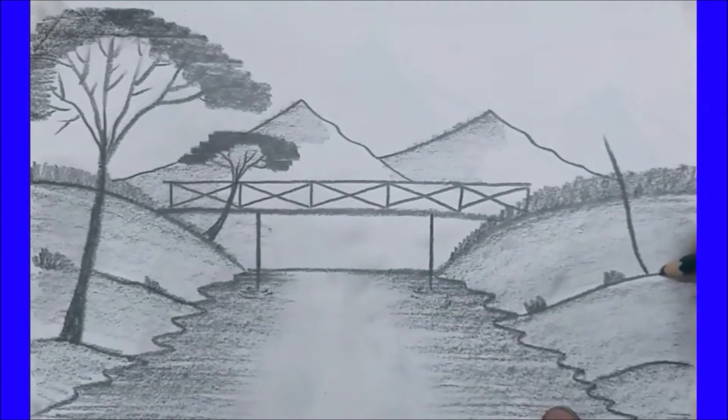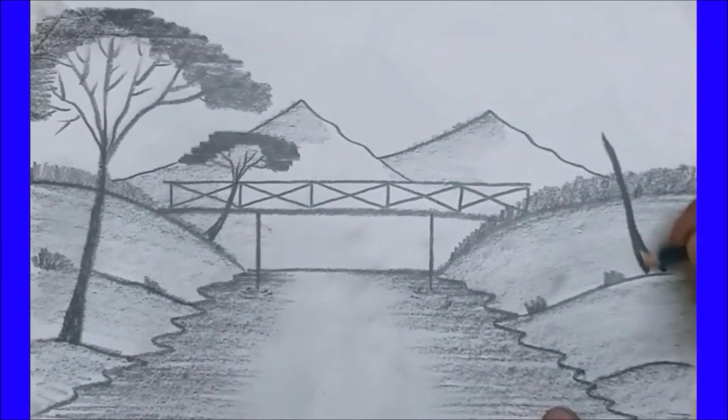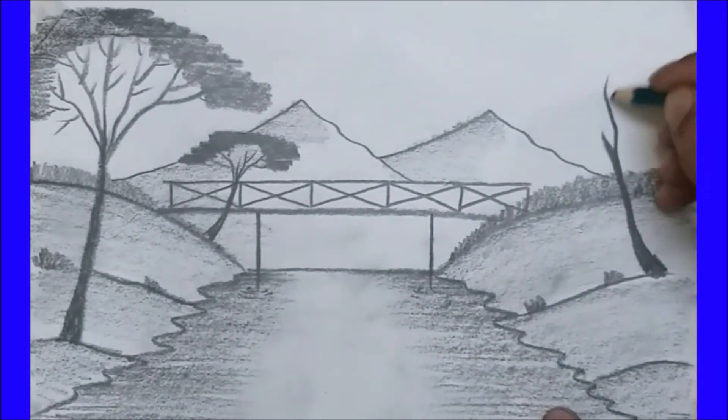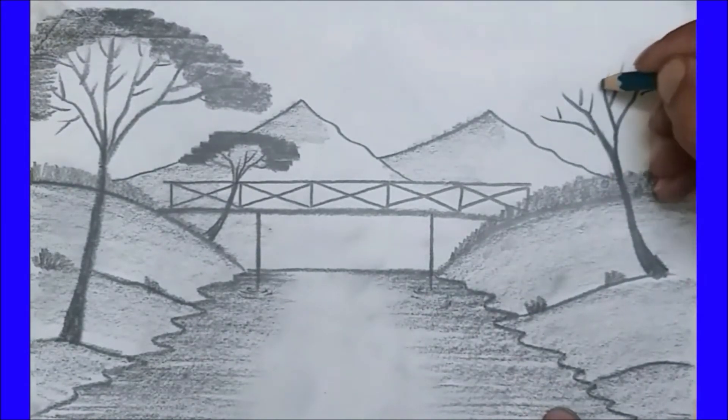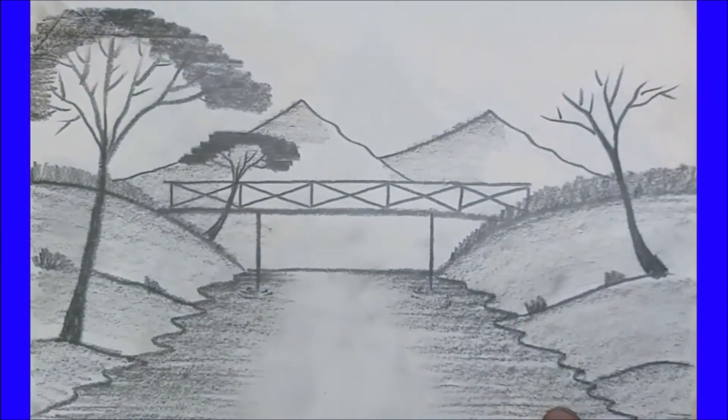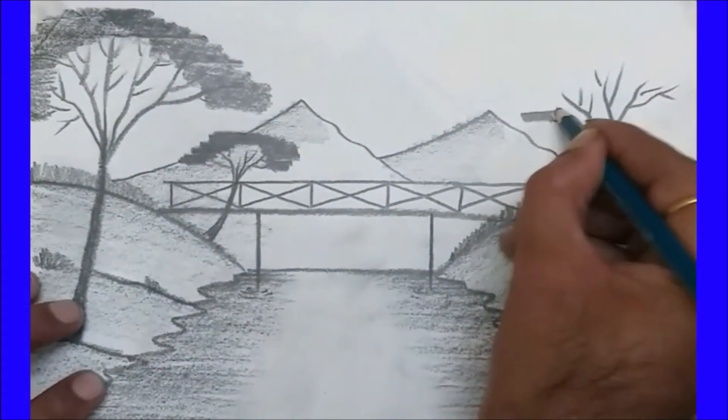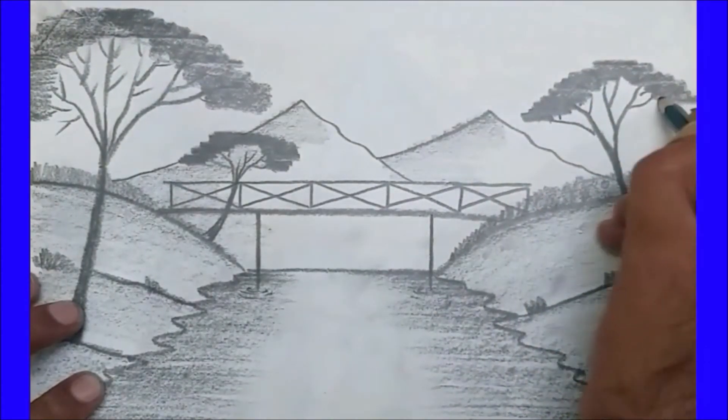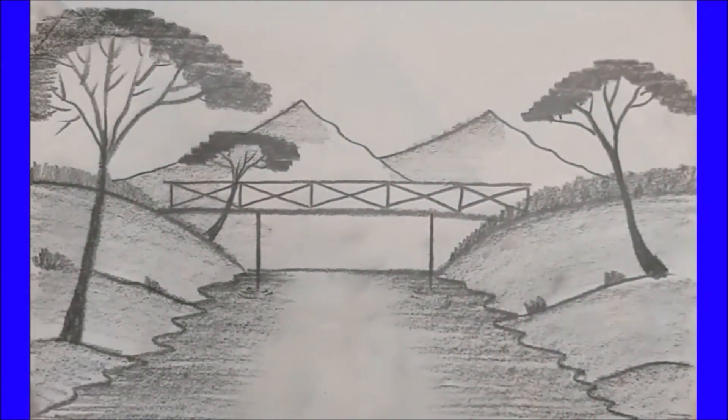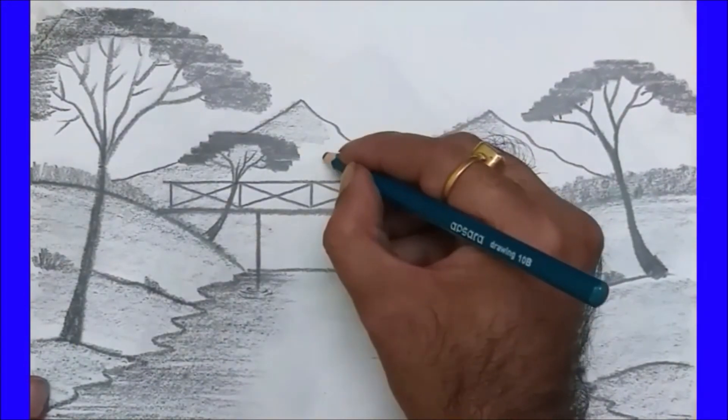One more I'm going to grow here. I'm making branches with dark toning, same thing. Here it's ready. Now I'm going to make two friends.